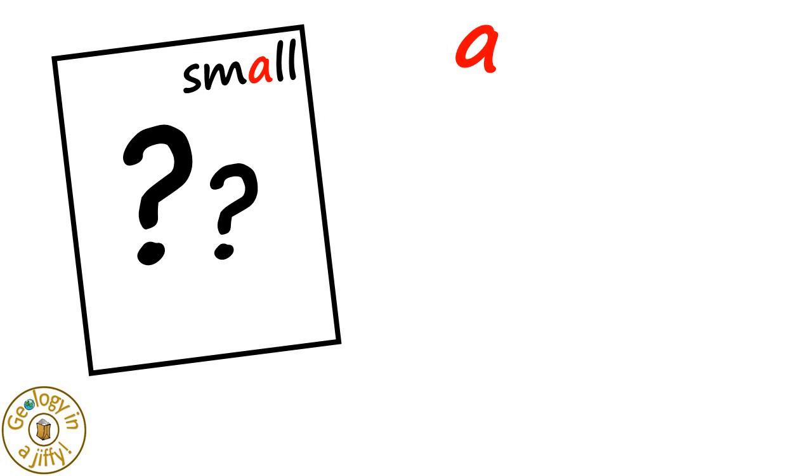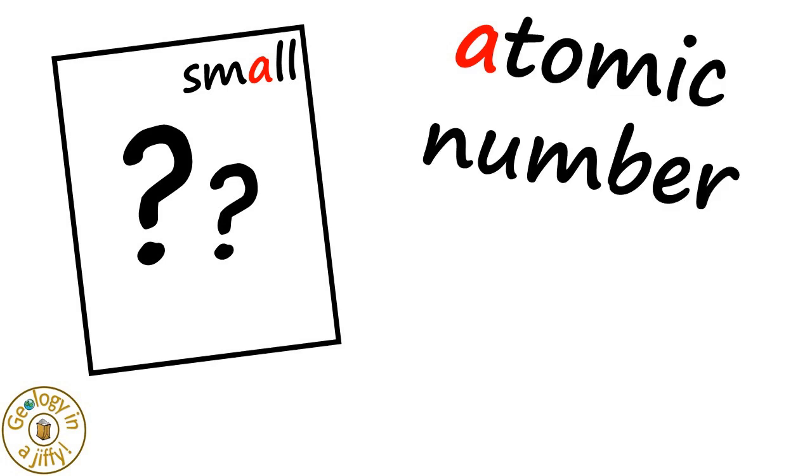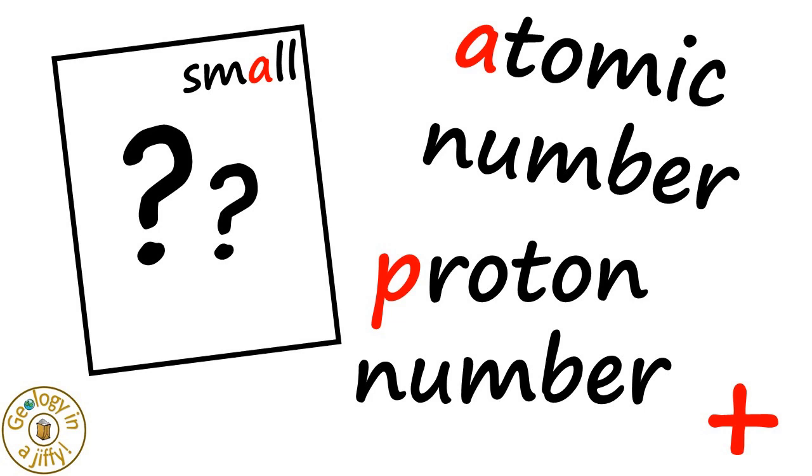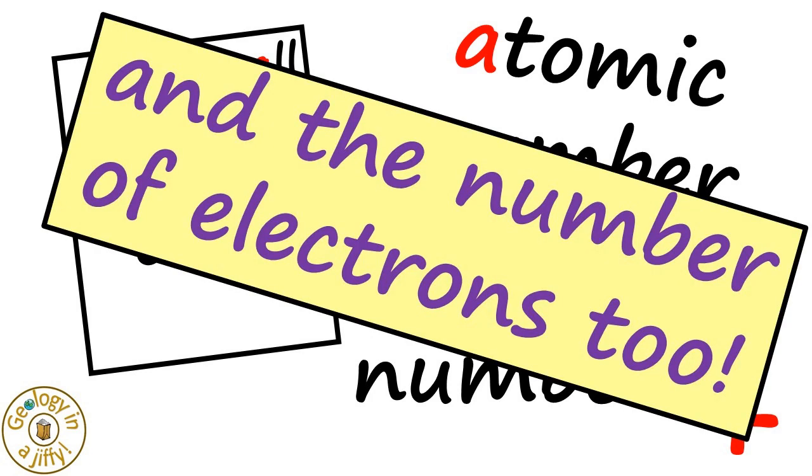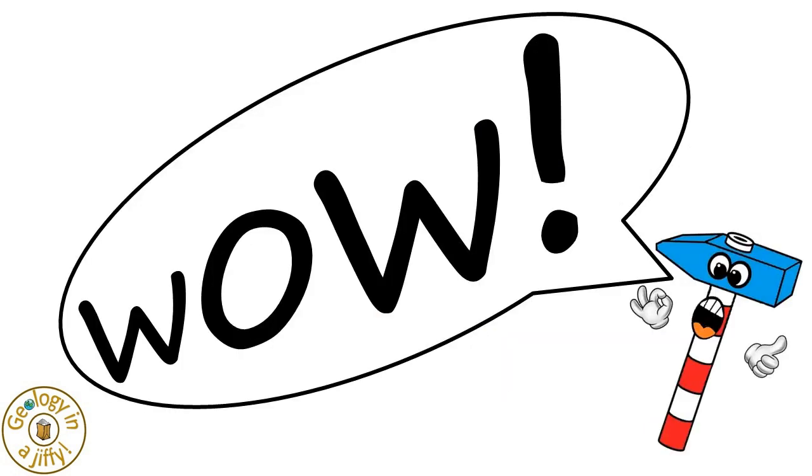So, the small number links with A, which stands for atomic number, which is also called the proton number, and so also tells us how many electrons there are in the atom too. Wow!